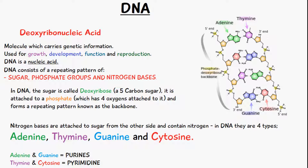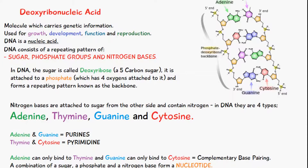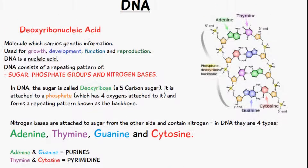So DNA has a deoxyribose sugar, a phosphate group, and nitrogen bases. The nitrogen bases are in the middle, with one nitrogen base attached to one sugar molecule on each side. There are four types of nitrogen bases: adenine, thymine, guanine, and cytosine.